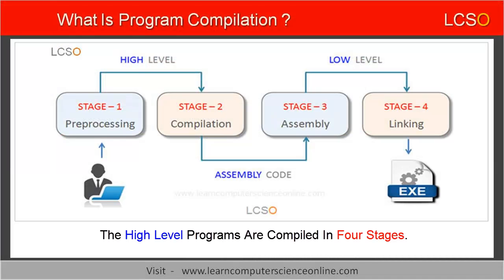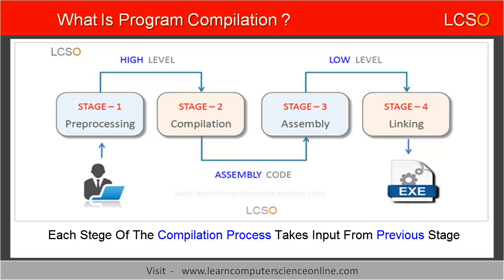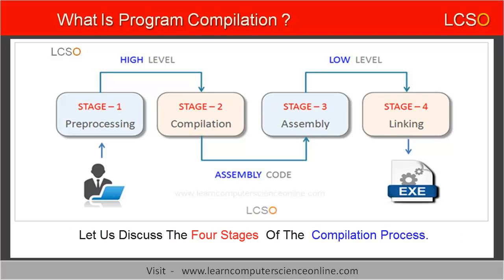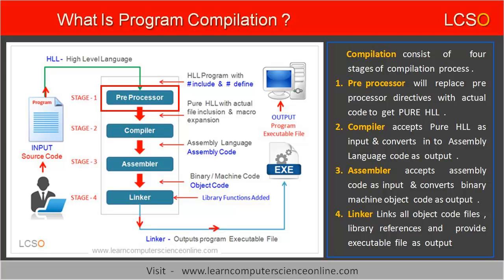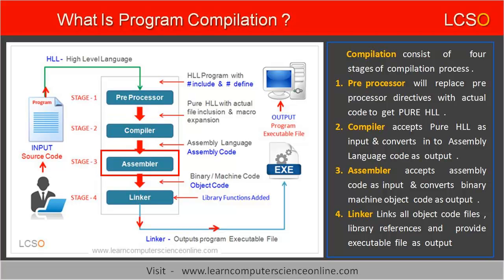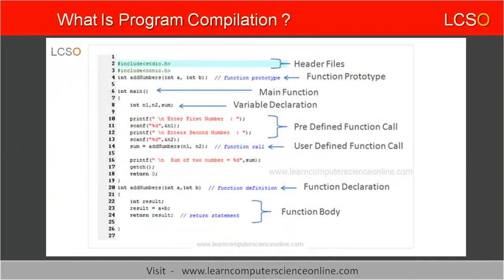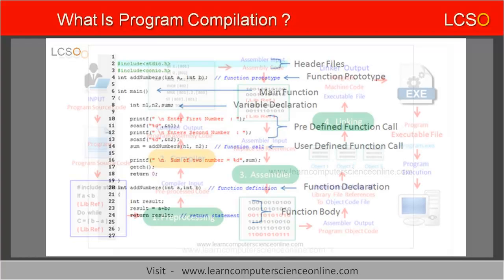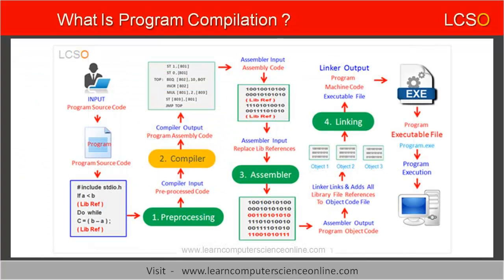High-level computer programs are compiled by the compiler in four stages. Each stage of the compilation process takes the input from the previous stage. The four stages are: pre-processing, compilation, assembly, and linking. The programmer can either write the program source code on a simple notepad program, or alternately use a more user-friendly program editor software called the integrated development environment. Let us now discuss each stage of the compilation process in detail.